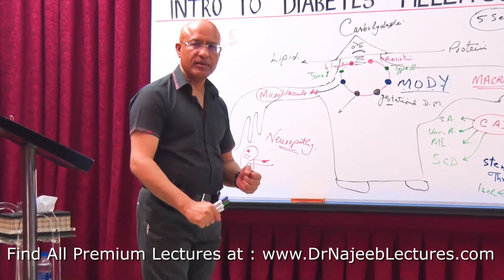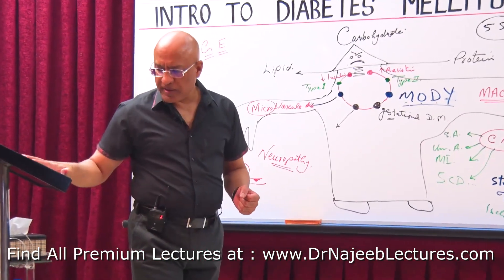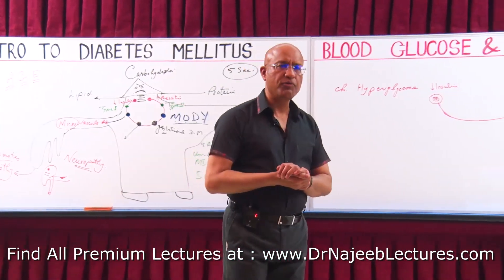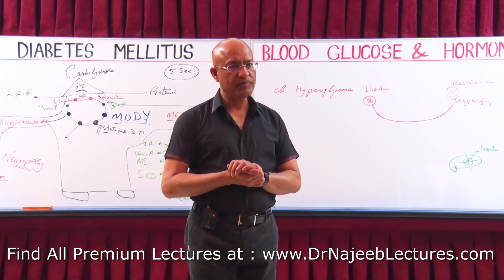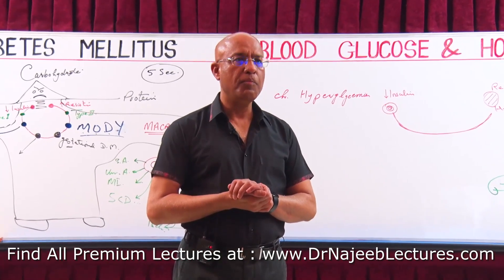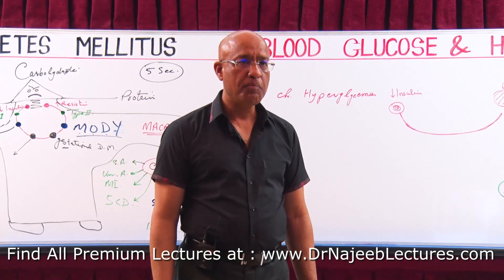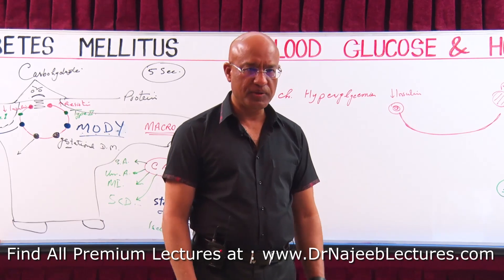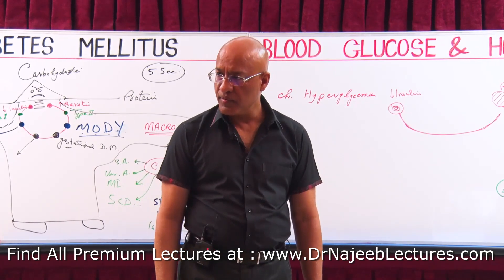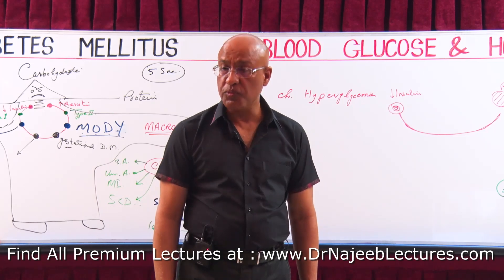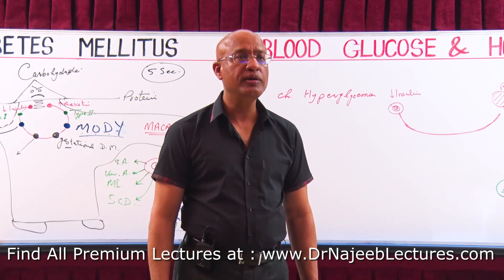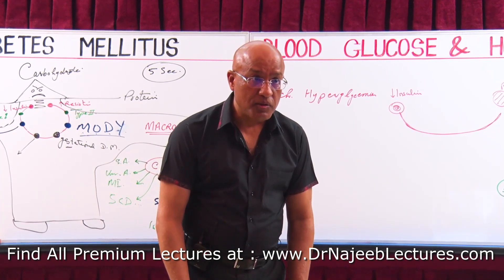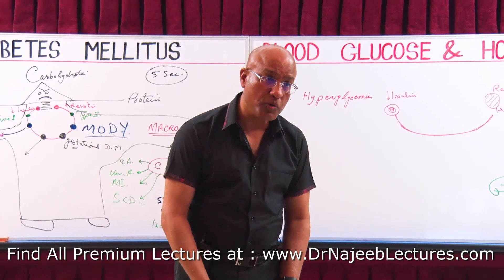Let's talk about neuropathy. It occurs in different forms in patients. One of the common manifestations is peripheral neuropathy — peripheral polyneuropathy, most commonly in lower limbs. In the lower limbs, the neurons, especially sensory neurons, may undergo dysfunction. But not only sensory — motor neurons can also suffer.